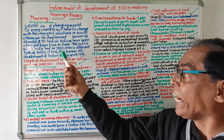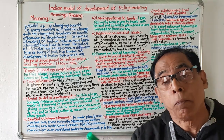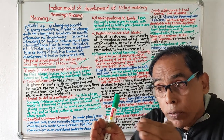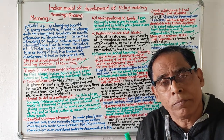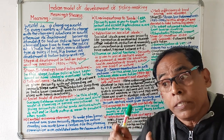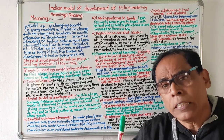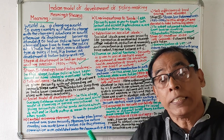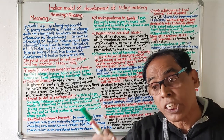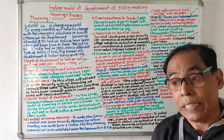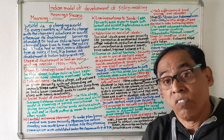The policy which India had in 1950 is quite different from the policy India has now. This is what is known as the development of Indian policymaking. As the world and time keep changing, every country must change its policies — otherwise it cannot exist. In India, policies are changed based on the changing times and ruling circumstances. This is the Indian Model of Development of Policymaking.